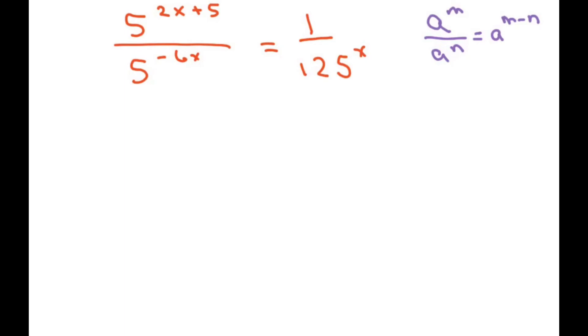So this is going to be your m part. This is your n part. So I'm going to write this as 5 to the 2x plus 5 minus whatever we have here, which is your n part. So that's going to be minus 6x. So that's that left side.